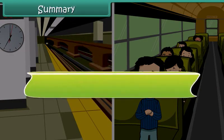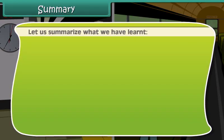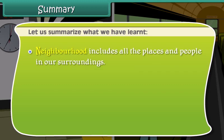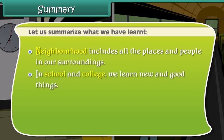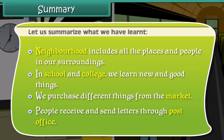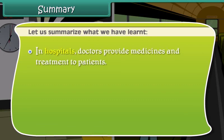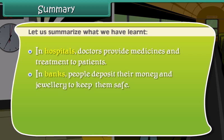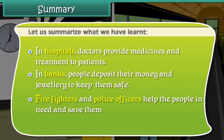Summary. Let's summarize what we have learned so far. Neighborhood includes all the places and people in our surroundings. In schools and colleges, we learn new and good things. We purchase different things from the market. People receive and send letters through the post office. In hospitals, doctors provide medicines and treatment to patients. In banks, people deposit their money and jewellery to keep them safe. Firefighters and police officers help the people in need and save them. Buses and trains connect distant places.